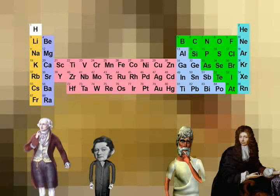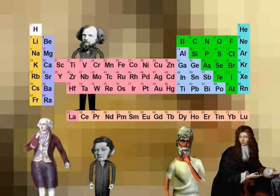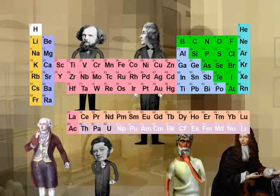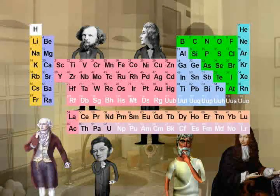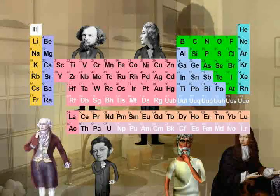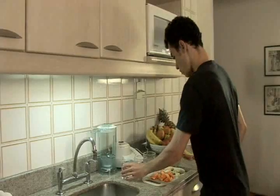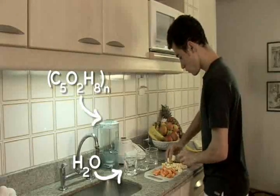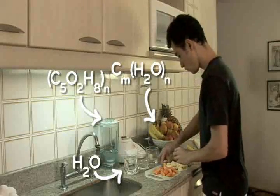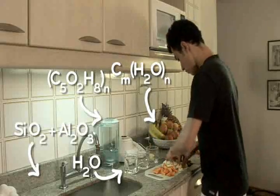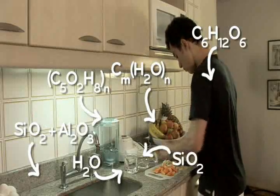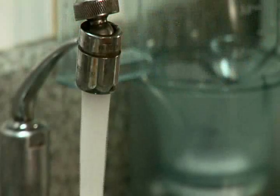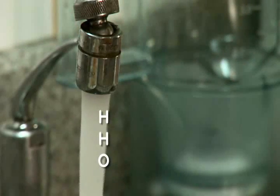Hoje definimos elementos químicos como sendo substâncias químicas puras, compostas por átomos que tenham a mesma quantidade de prótons em seu núcleo. São os ingredientes do mundo. Conhecer a gama de elementos químicos naturais nos possibilita conhecer as receitas possíveis que vão constituir a matéria em todas as suas manifestações e transformações. As misturas desses elementos dão sabor ao mundo.